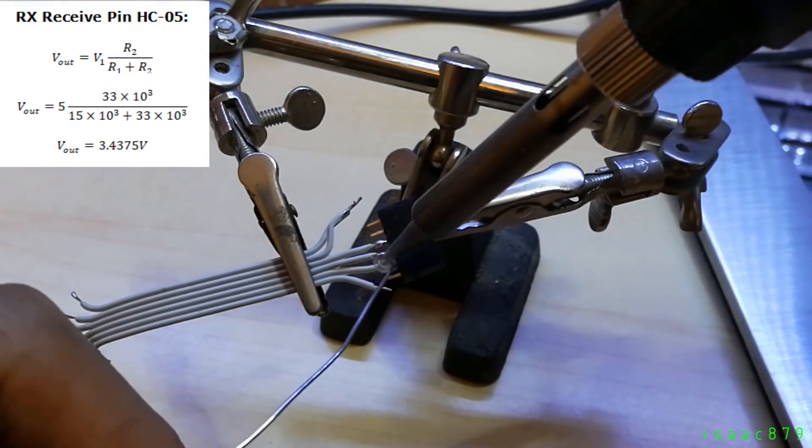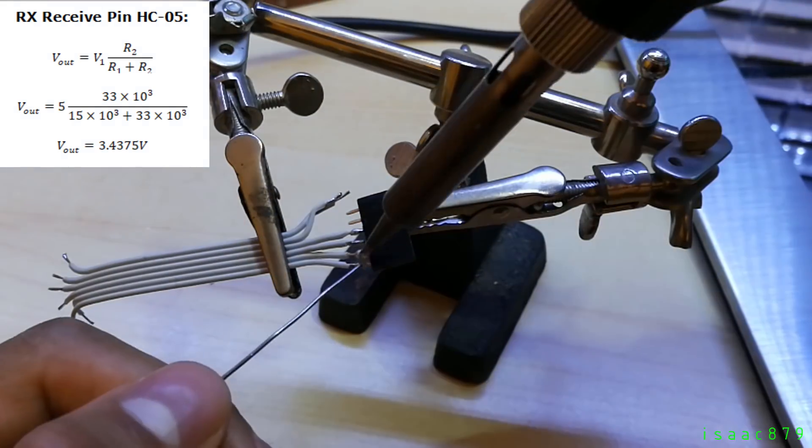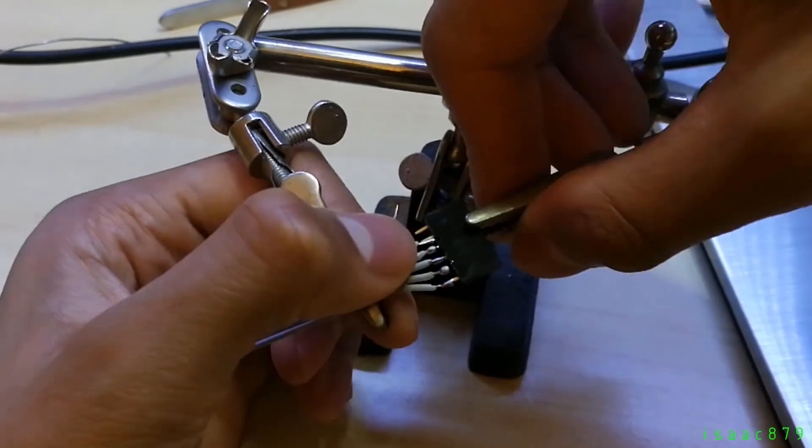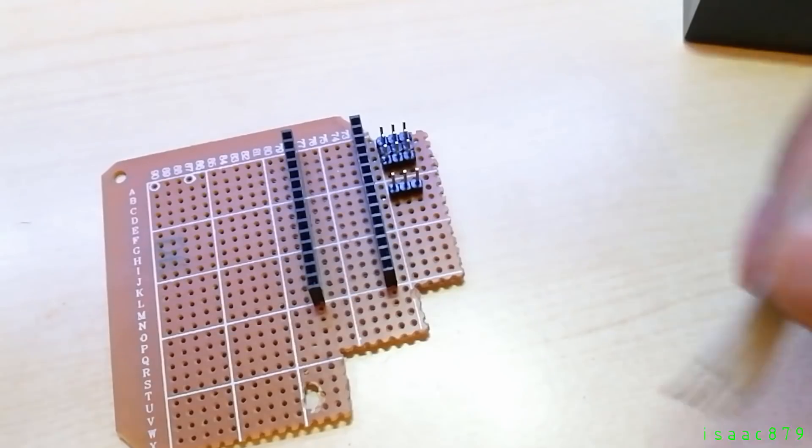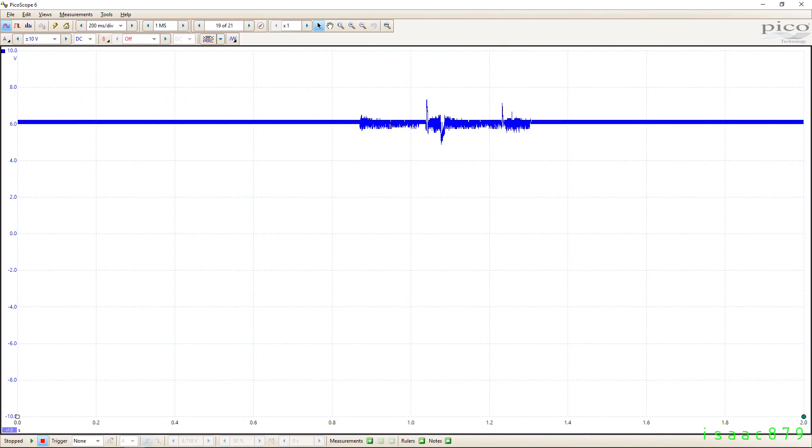The servos require 6V and a significant amount of current, so a buck converter is used to step down the battery voltage. The servos can create quite a bit of electrical noise and fluctuations in the voltage as you see here on my oscilloscope. So capacitors were added to help smooth it.